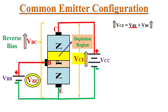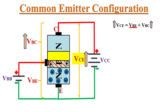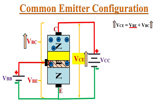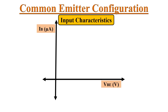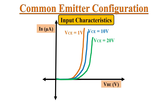Due to the widening depletion region, the width of the base region decreases. Because of this reduced base width, there are very few holes available in the P region. Hence, fewer electrons from the emitter will recombine with holes in the base region, and most of the electrons will get collected at the collector region. Because of this behavior, the base current IB reduces. So as the value of VCE increases, base current IB reduces — which is what we observe in the input characteristic curve. This explains the shape of those curves.